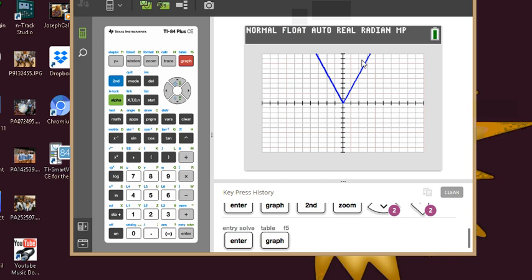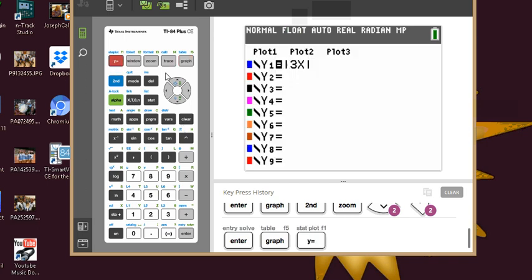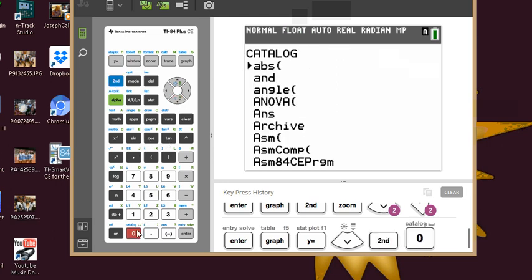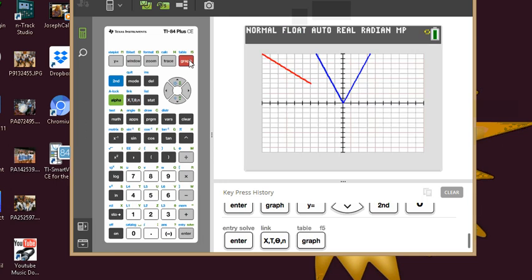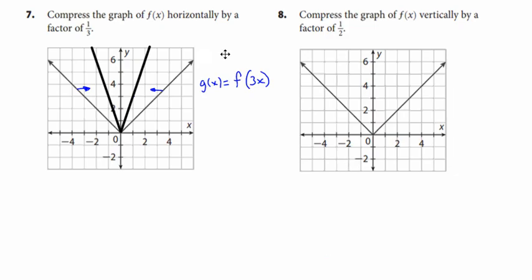There we go. And so that's what it looks like. And the original one, I'm going to put down here in red. I'm going to put second catalog enter x. So the original version is this red one. And then the vertically compressed by a factor of one third, that's what blue one is. All right. Next.